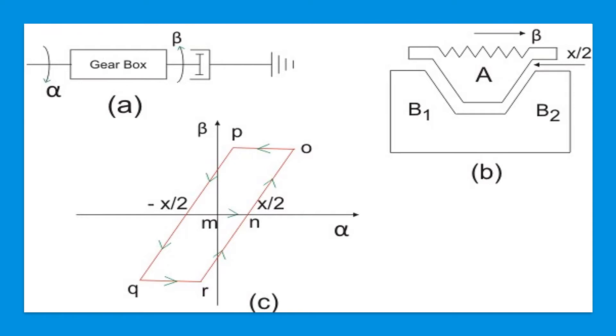As the input motion is reversed, the contact between the teeth A and B1 is lost and the driven gear immediately becomes stationary based on the assumption that the load is friction controlled with negligible inertia. The output motion therefore ceases till tooth A has travelled a distance X in the reverse direction as shown in Figure C by the segment OP.